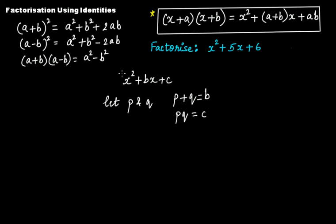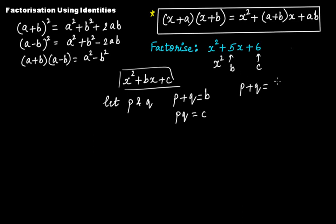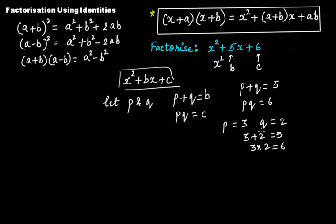If we relate this general quadratic expression to this identity, here b is 5 and c is 6. So we have to find two numbers such that p plus q equals 5 and pq equals 6. If we take p equal to 3 and q equal to 2, then 3 plus 2 equals 5 and 3 multiplied by 2 equals 6. So our two numbers are 3 and 2.